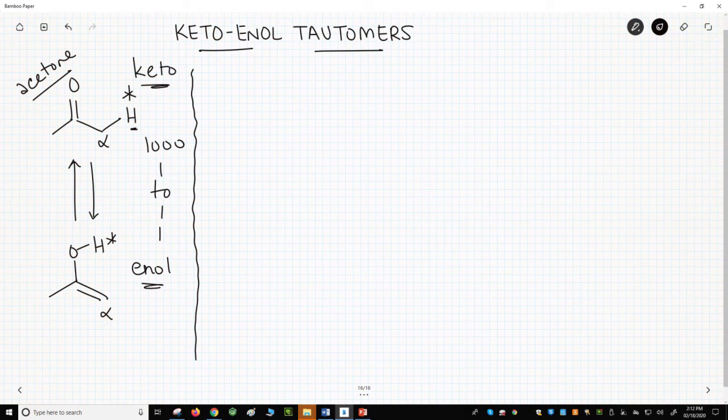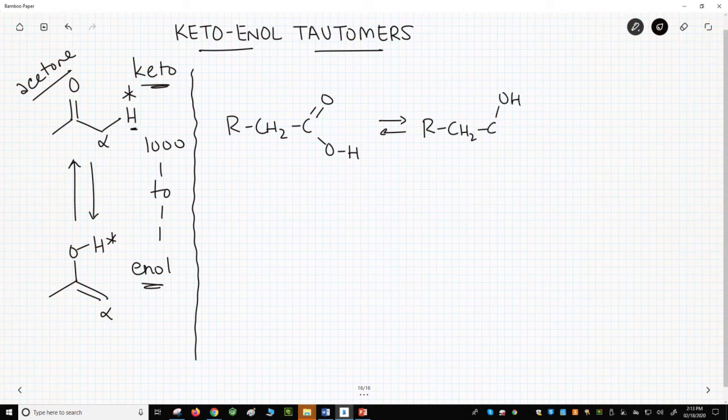There are two other functional groups that we see in introductory organic classes that frequently have tautomers. The first is the carboxylic acid. A carboxylic acid has two tautomers.